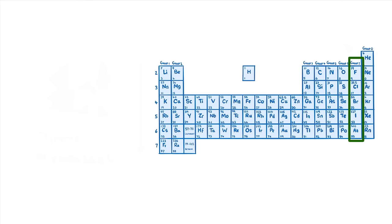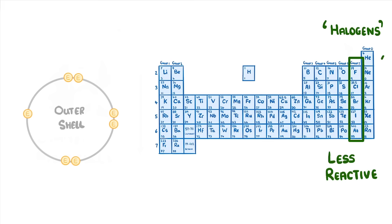Group 7 elements meanwhile, which we call halogens, all have 7 electrons in the outer shell. Although these elements become less reactive as you go down the group.